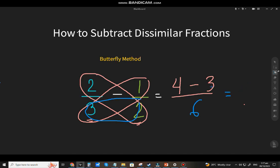Minus mo lang yan, that will be 4 minus 3, that will be 1. At yung denominator is 6. And there you have it. So 2 thirds minus 1 half, ang sagot ay 1 over 6. Ganun lang sya kadali.